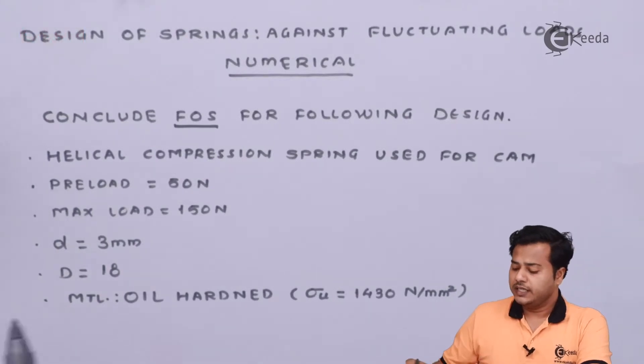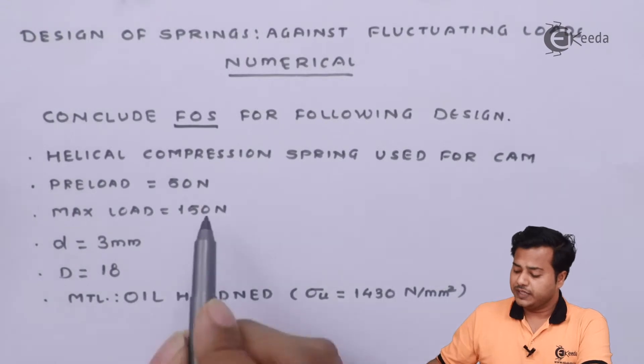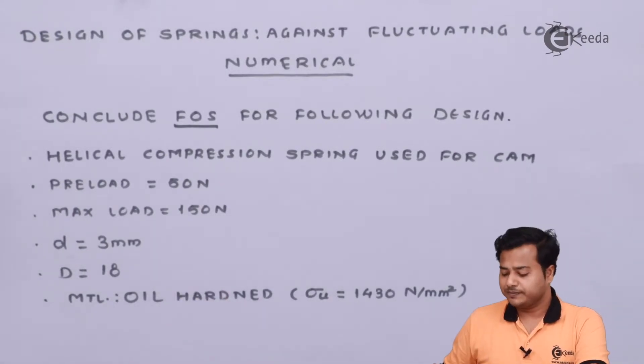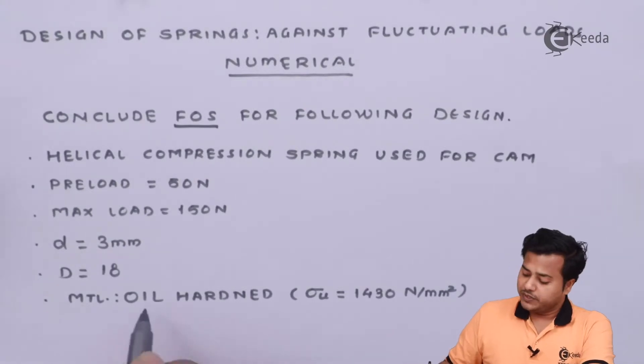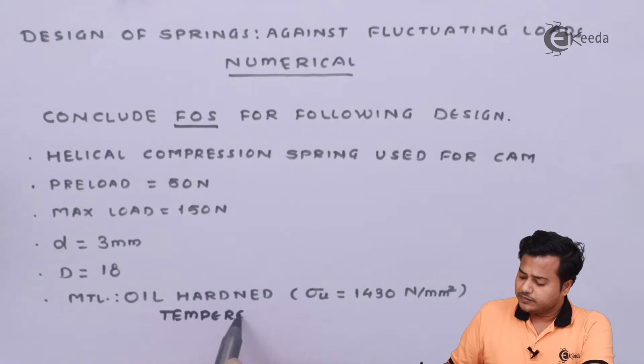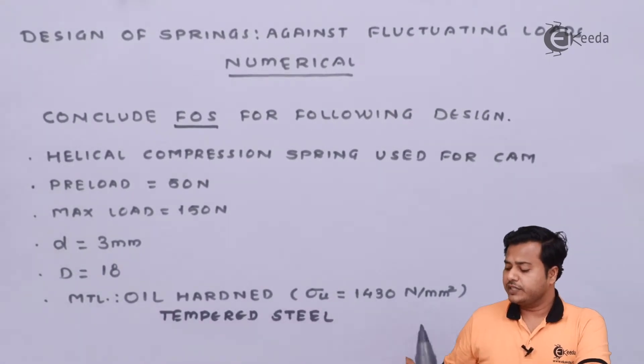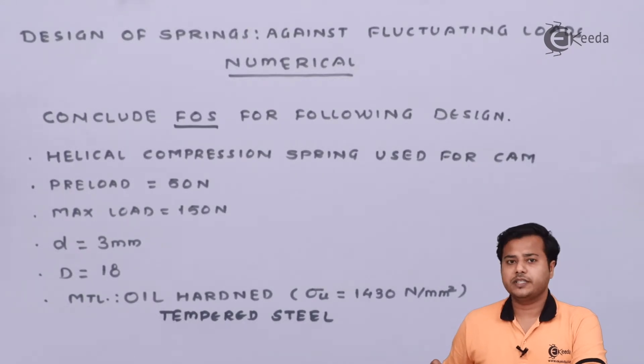Maximum load is 150 N. So students here we need to understand that this is the minimum load that is acting on the given spring and this is the maximum load acting on the spring. Ahead they have mentioned the diameter of wire which is 3 mm and the nominal diameter of the spring coil. Next, they have given us the material for oil hardened. So it is the oil hardened tempered material whose ultimate strength is mentioned 1430 N per mm².